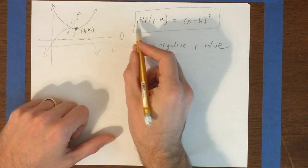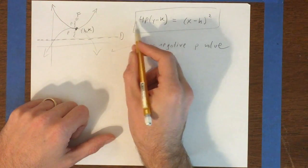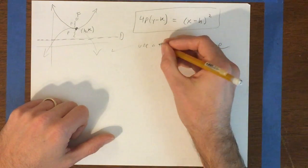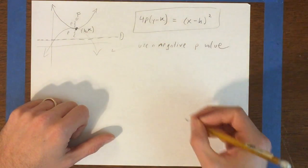So the negative would end up right over here, like on this side where the p is. Okay, so use a negative p value if you want it to go down.